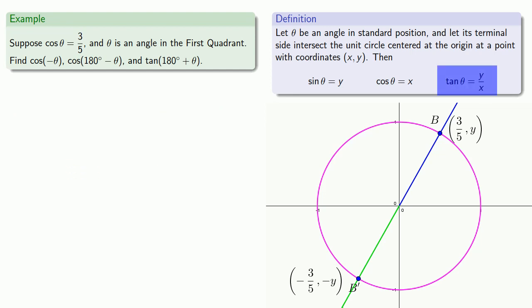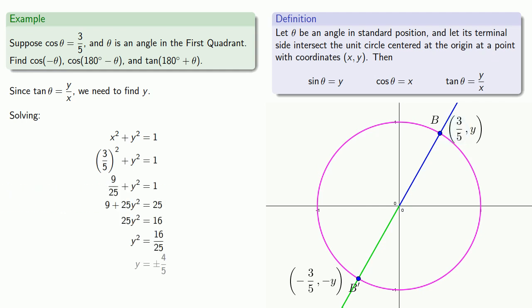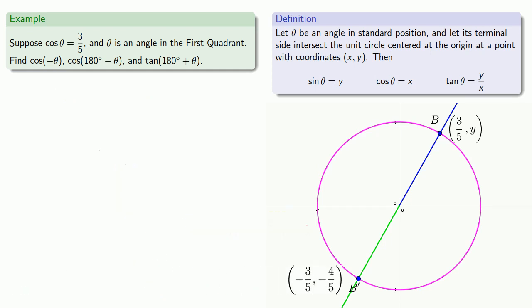Since tangent of θ is y over x, we need to find y. Since this is a point on the unit circle, x² + y² = 1. We know the value of x, so let's solve for y. Since (x, y) is in the first quadrant, y has to have the positive value. That means the reflection across the origin has coordinates (-3/5, -4/5). Tangent is our y-coordinate divided by our x-coordinate, so tangent is (-4/5) / (-3/5), which equals 4/3.